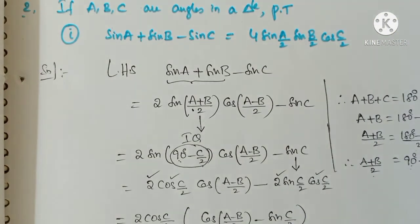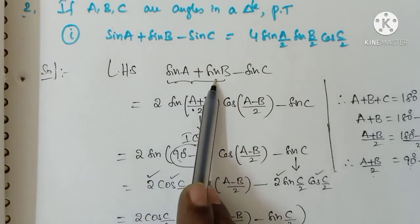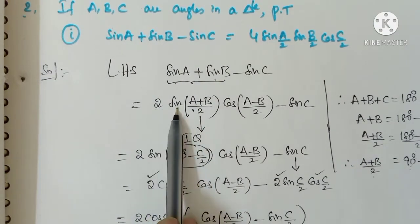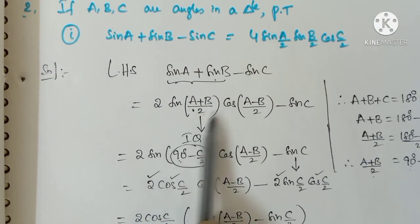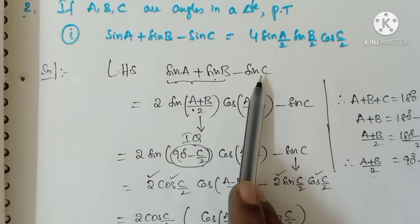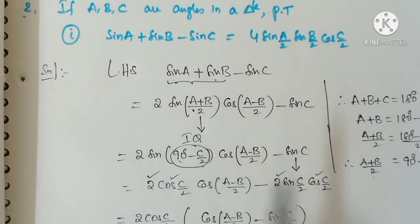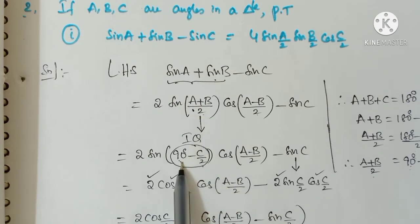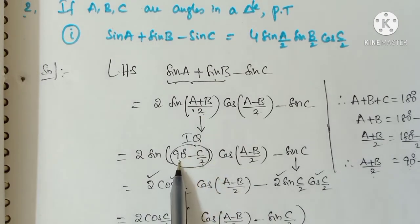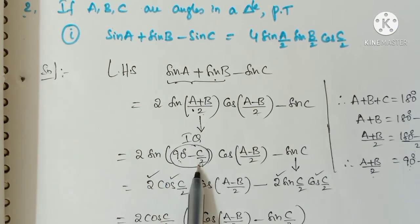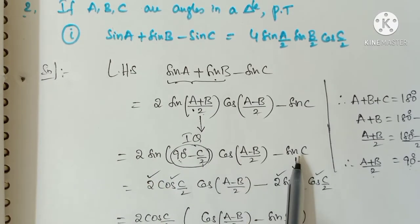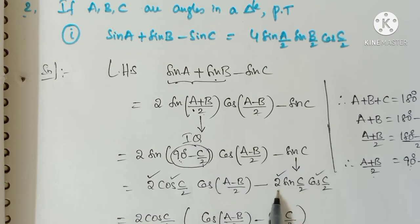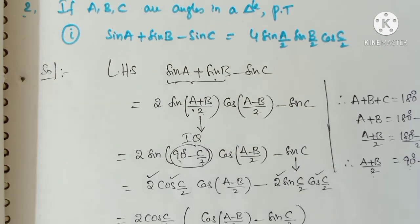To repeat the steps: sin A plus sin B is replaced by 2 sin((A+B)/2) cos((A-B)/2) and sin C is kept as is. Next, replace (A+B)/2 by 90 minus C/2. When there is 90 degrees, sin is converted to cos, giving 2 cos(C/2) cos((A-B)/2). Then we write sin C as 2 sin(C/2) cos(C/2).